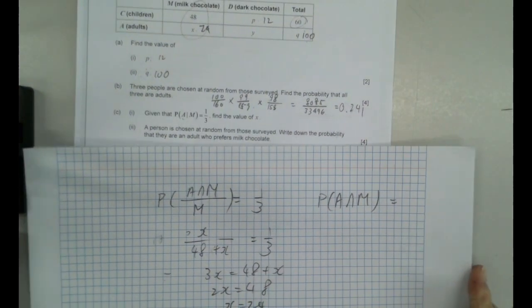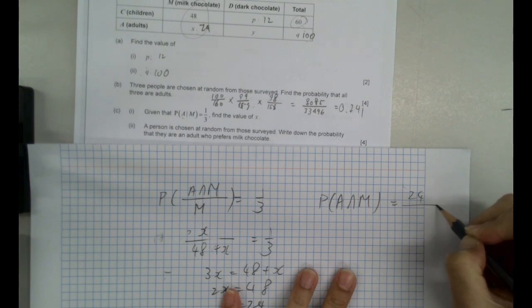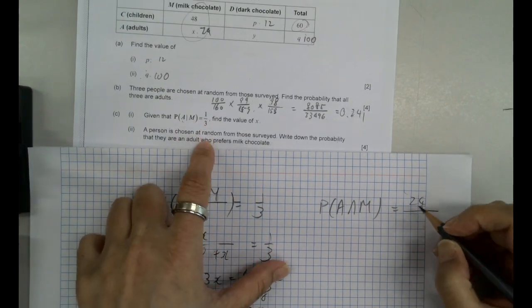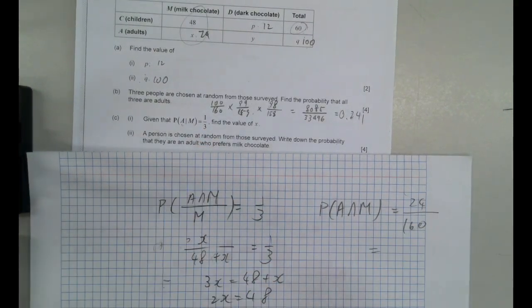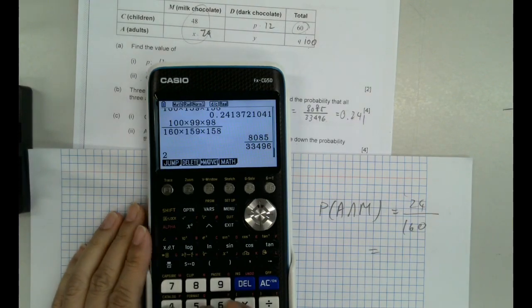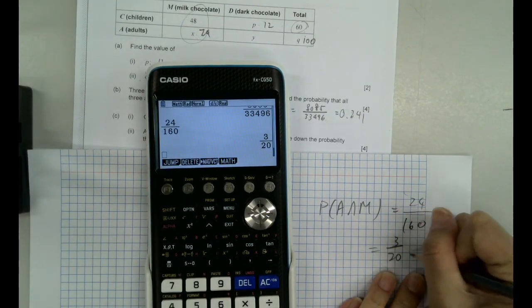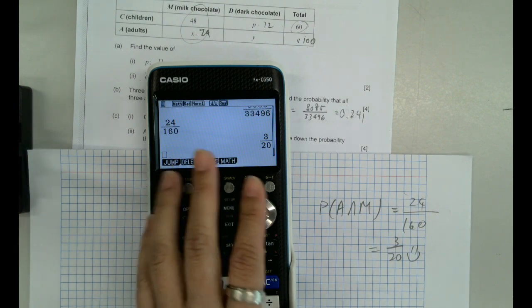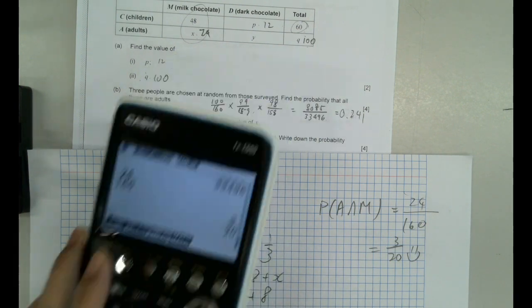So we will have 24 out of 160 total. So we simplify that. We've got 3 out of 20. I prefer simplified version with those. So this is our second question there.